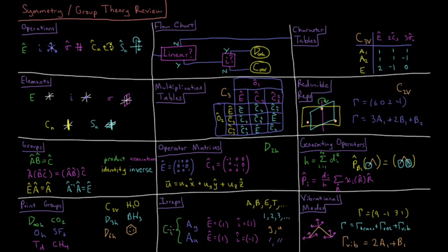So these irreps have names like A and B or E or T. They might have subscripts like 1, 2, or 3. They might have subscripts like G and U, and they might also have superscripts like prime or double prime.